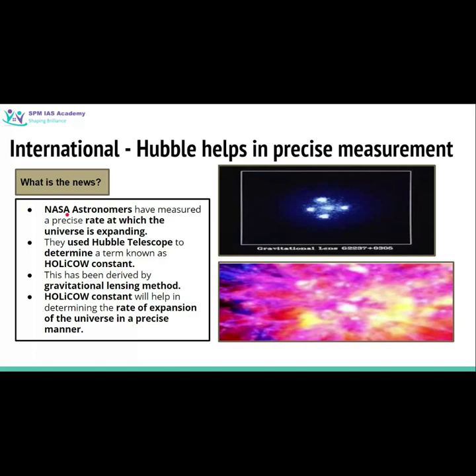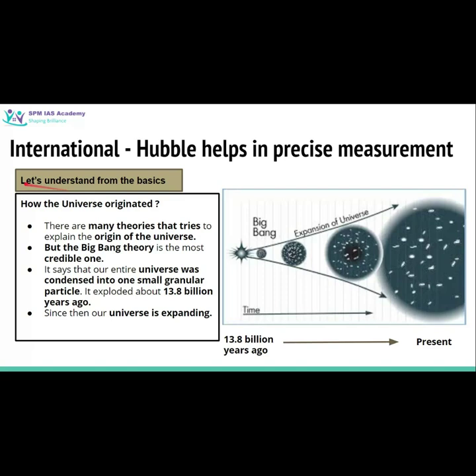The article says that NASA astronomers have measured the precise rate at which the universe is expanding, and they have used the Hubble telescope to determine a value of a figure known as the Hubble constant. This Hubble constant has been determined using the gravitational lensing method, and this constant will help in determining the rate of expansion of the universe in a precise manner. To understand this, we need to understand the full background from the basics.